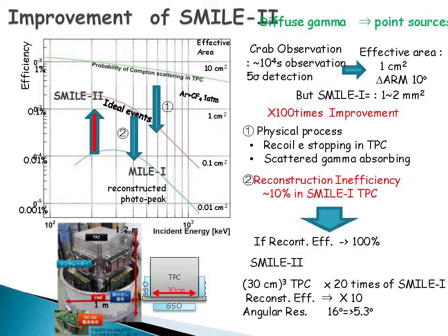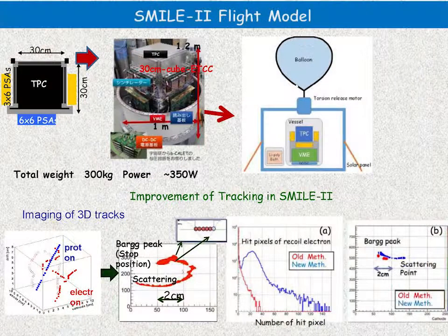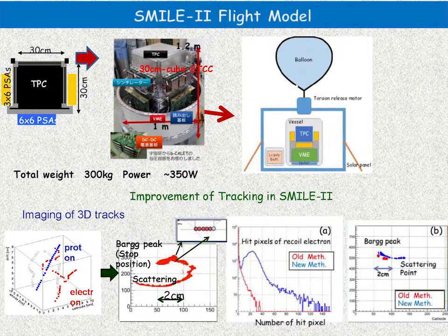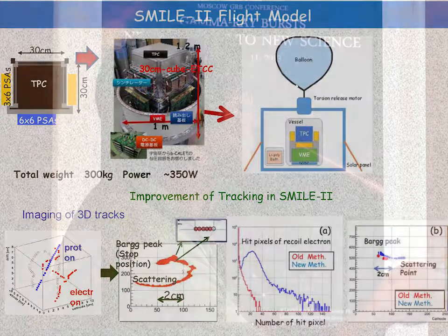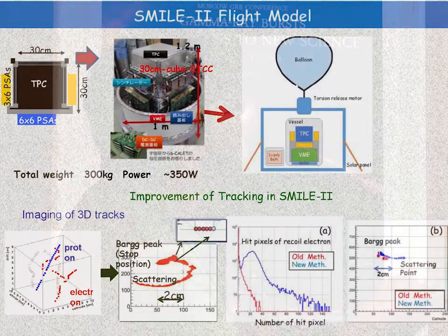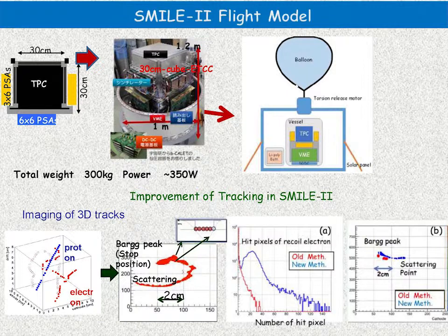The SMILE-2 volume is 30×30 cm, though this is not so large. The total weight is about 80 kg including crystals. The new tracking method measures each point's pulse width — there are scattering points and endpoints visible. The number of tracking hits increases about 10 times compared to the previous method. The total system weight is only 300 kg — lighter than before because we developed all components in smaller form factors.